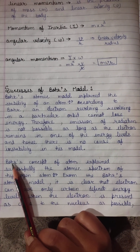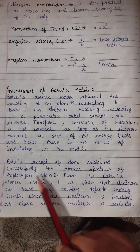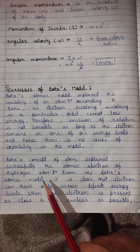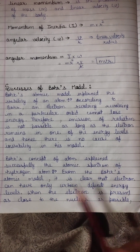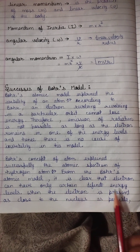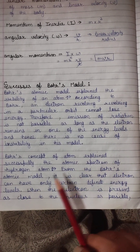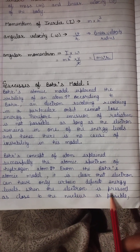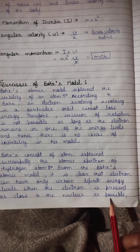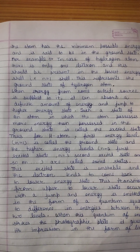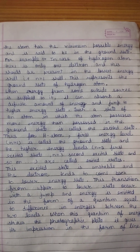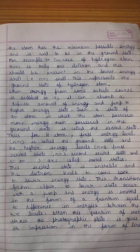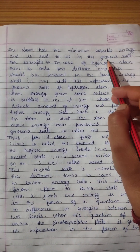Second, Bohr's concept of atom explains successfully the atomic spectrum of the hydrogen atom. From Bohr's atomic model, it is clear that an electron can have only certain definite energy levels. Bohr told us that electrons have their own energy levels. When the electron is present as close to the nucleus as possible, the atom has the minimum possible energy and is said to be in the ground state.